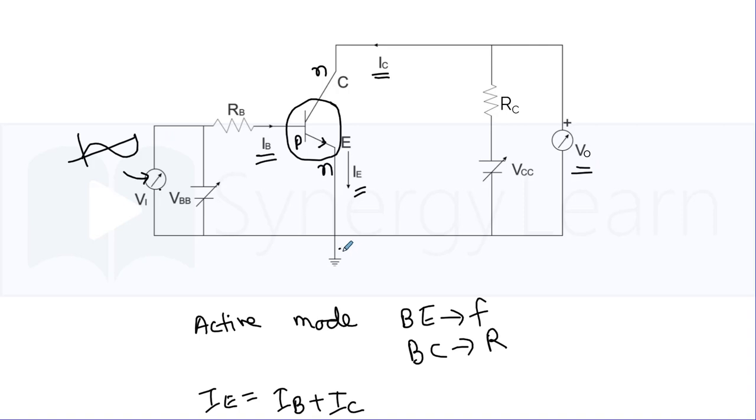The emitter is kept common, hence it is called common emitter mode. So the input is in base, the output is in collector, and emitter acts common - it is either grounded or acts as reference.